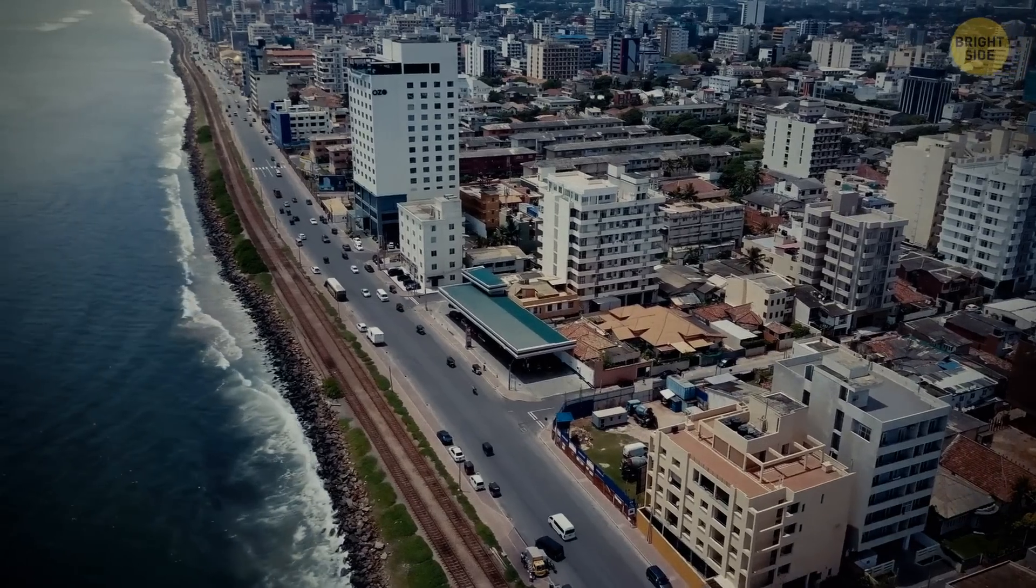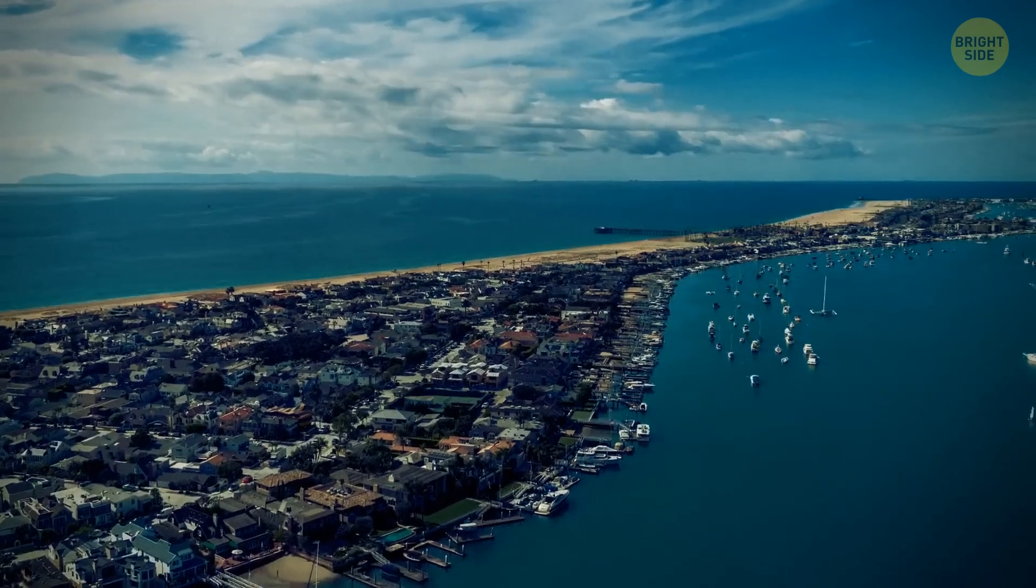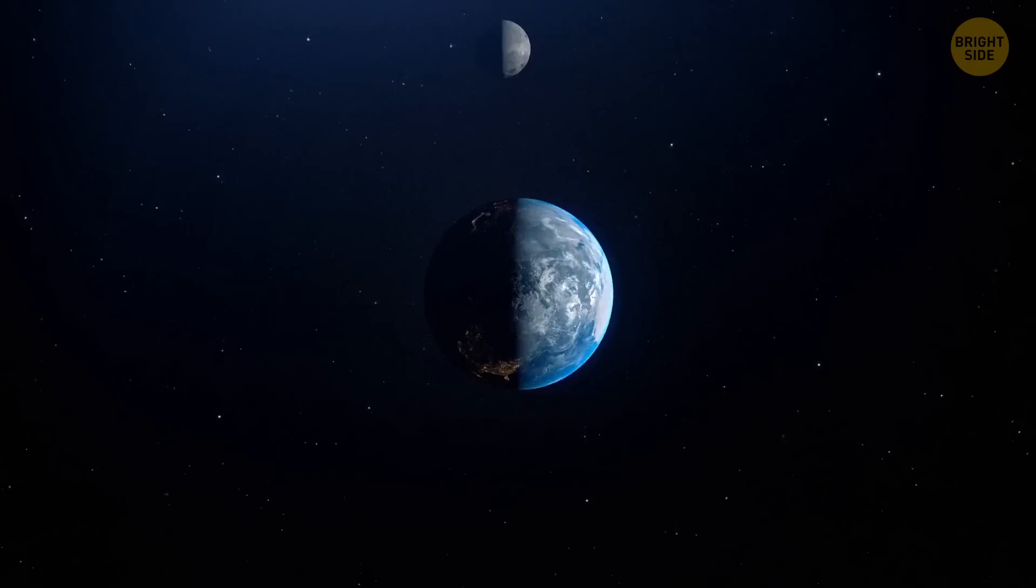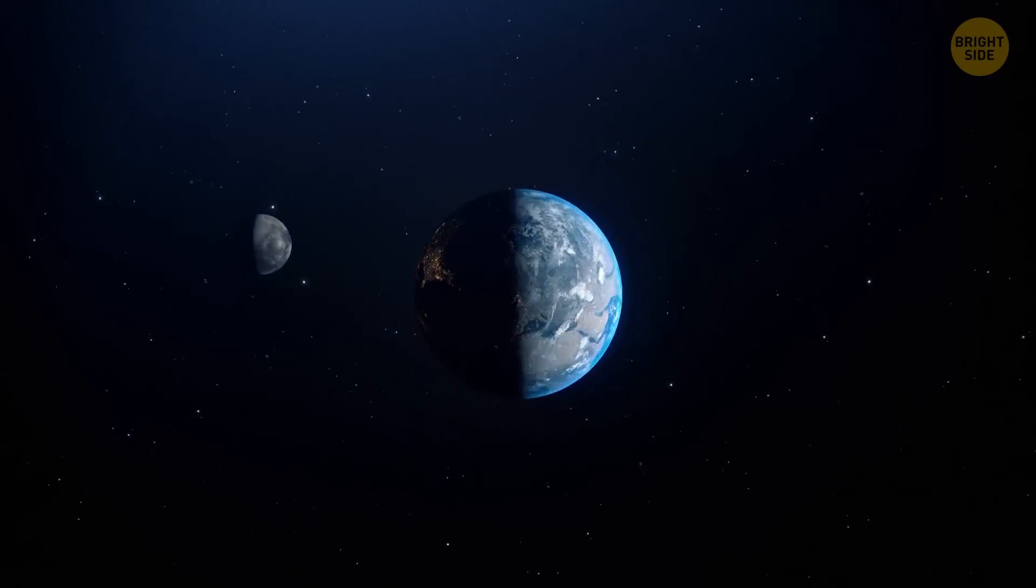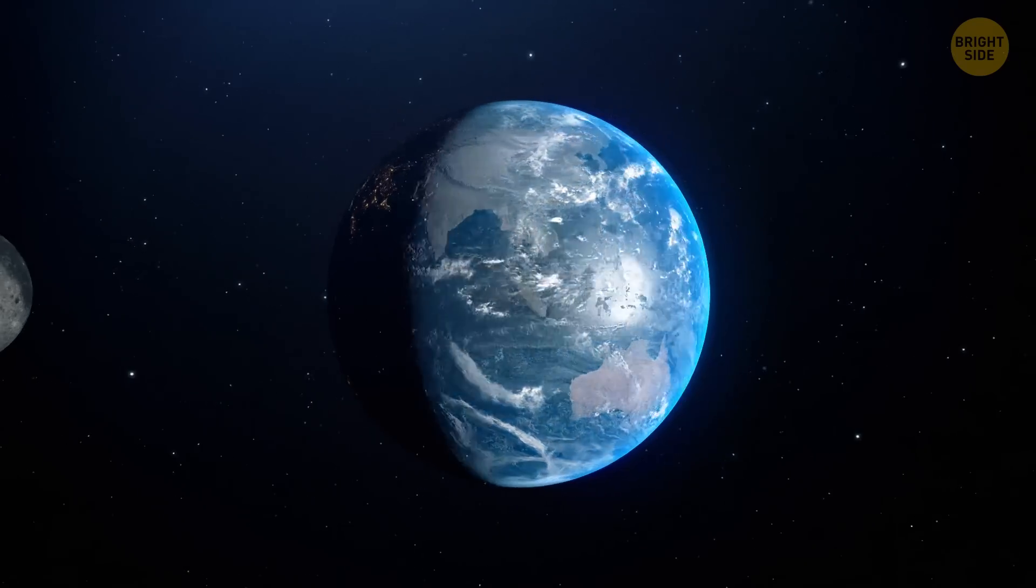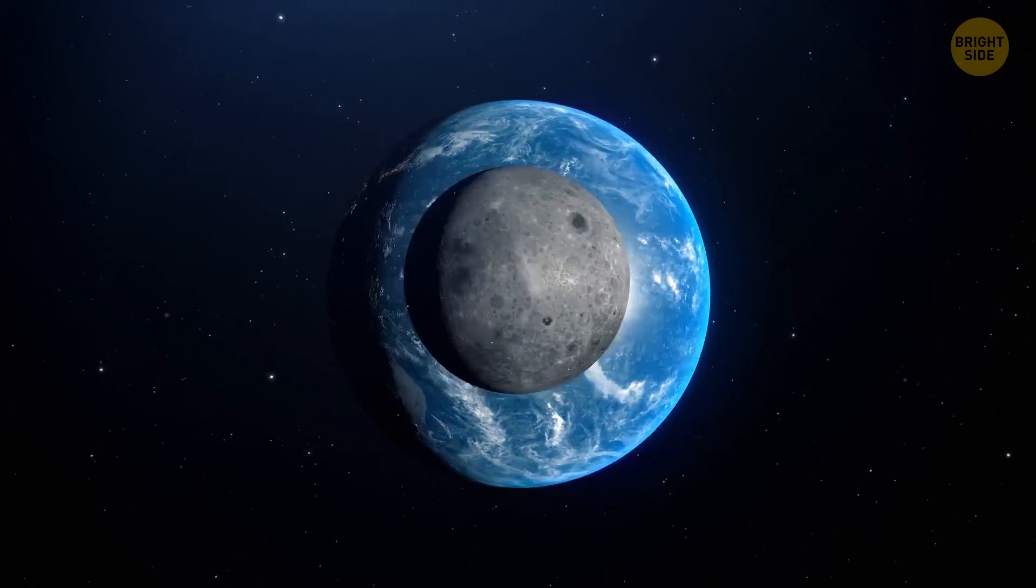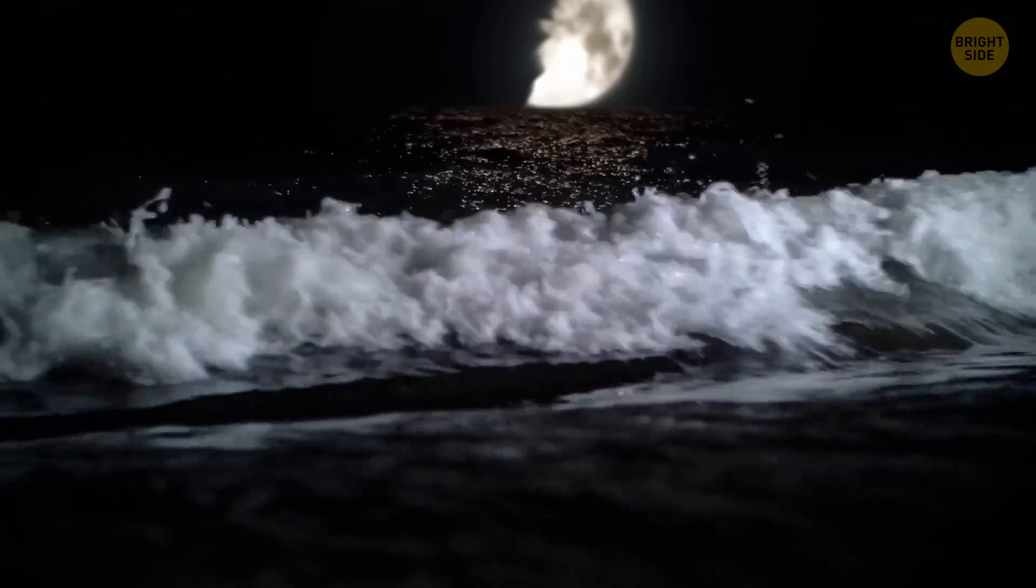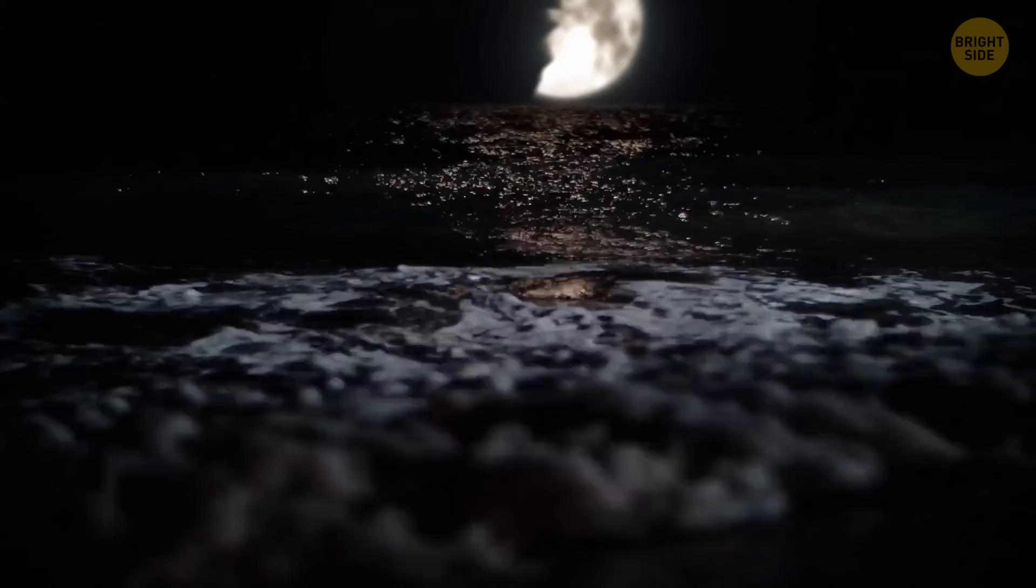But those who live on the coast of the seas and oceans notice the consequences. The moon used to influence the tides. It was flying around the Earth and made oceans take an oval shape. There were tides on the side where the moon was closer. There were ebbs on the opposite side. But now, this schedule is wrong. Half of the moon attracts less water.